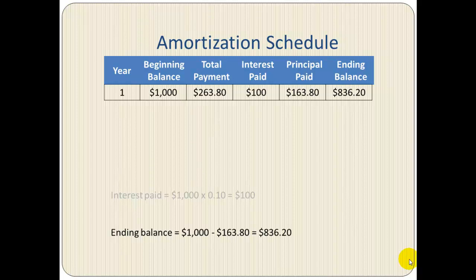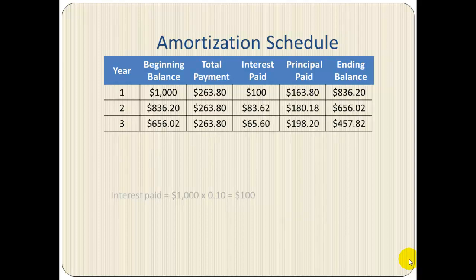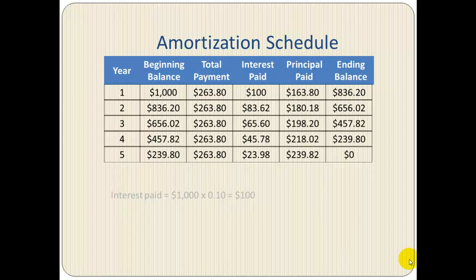The ending balance is one thousand minus one sixty-three eighty, which equals eight thirty-six twenty. At the beginning of year two, the beginning balance is eight thirty-six twenty. Again we have two sixty-three eighty as a payment; eighty-three sixty-two is the interest paid — ten percent of the beginning balance — and the principal paid is the difference, one eighty point eighteen, giving an ending balance of six fifty-six oh two. We continue this process for the remaining years until the ending balance reaches zero in year five.